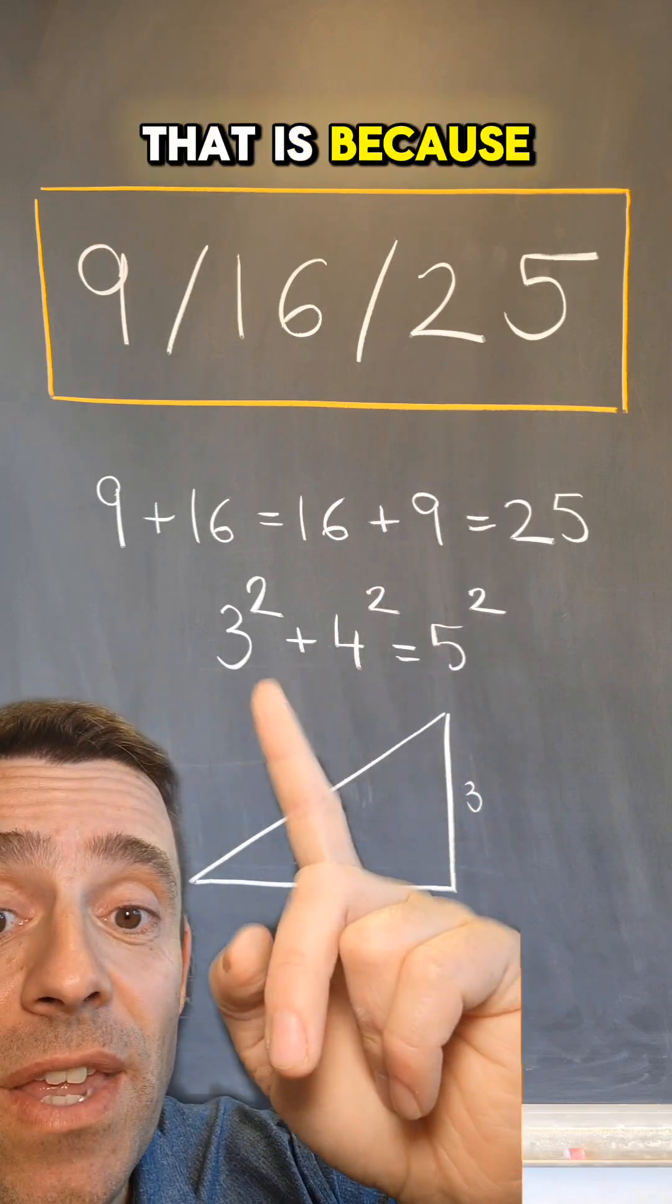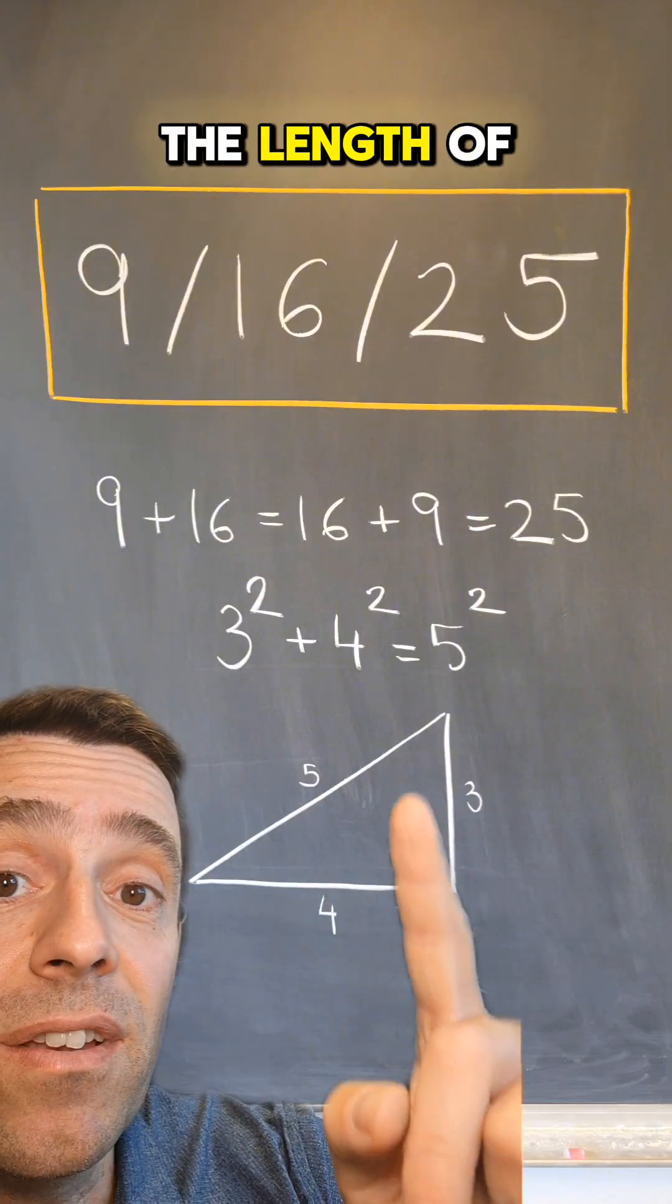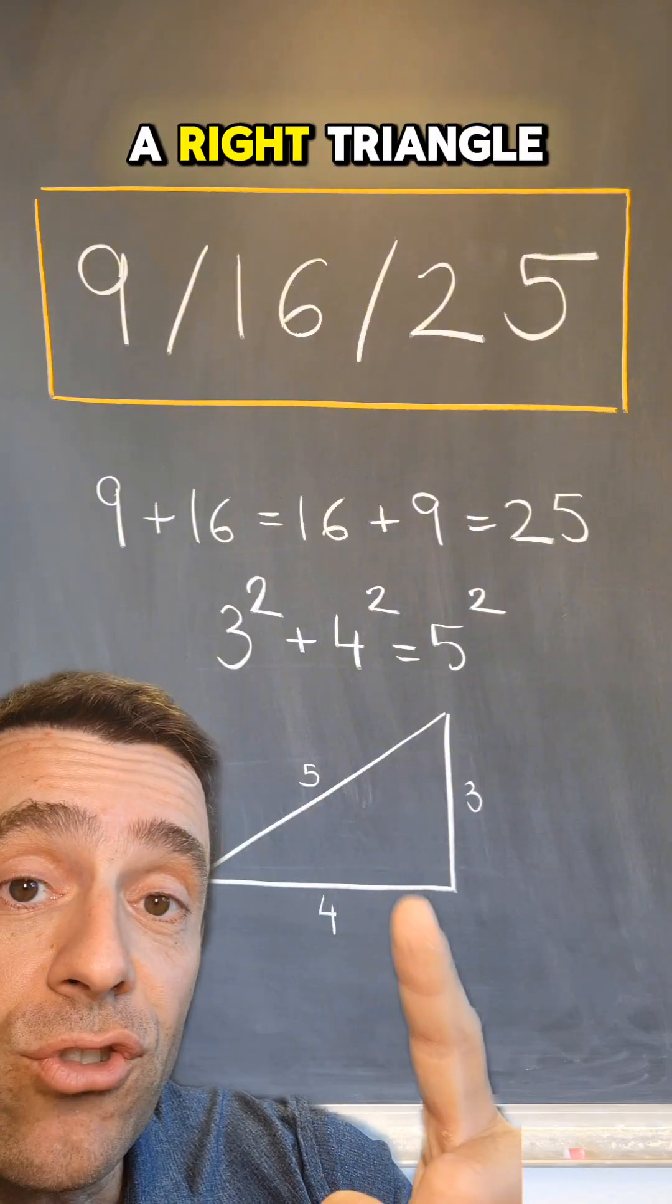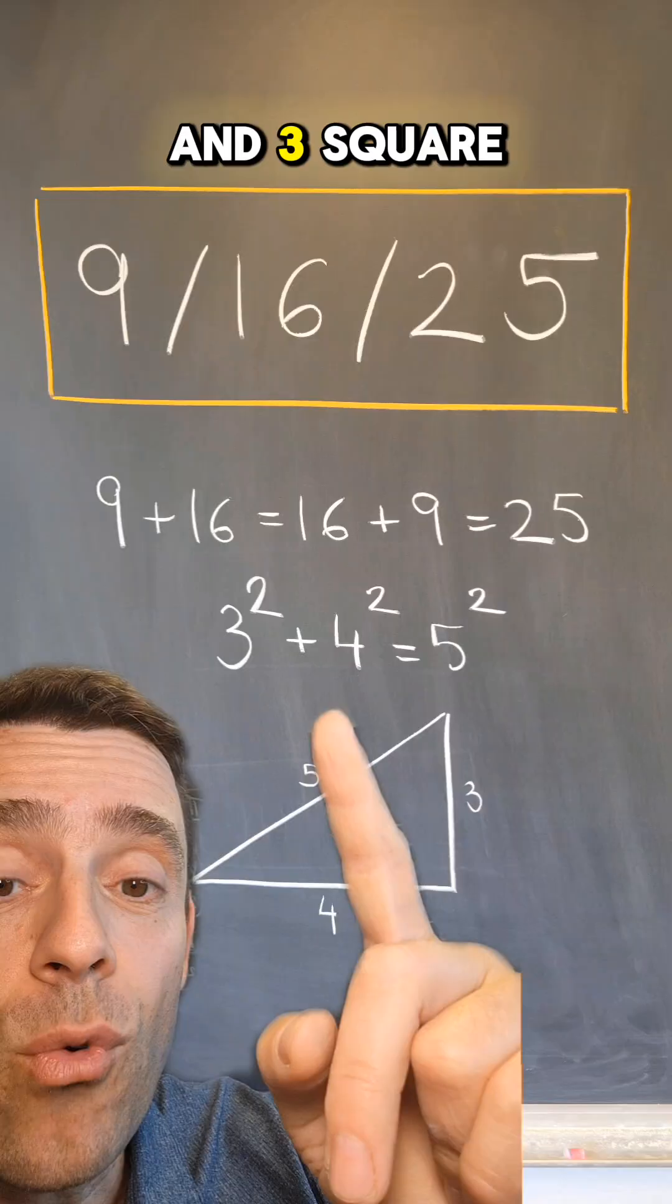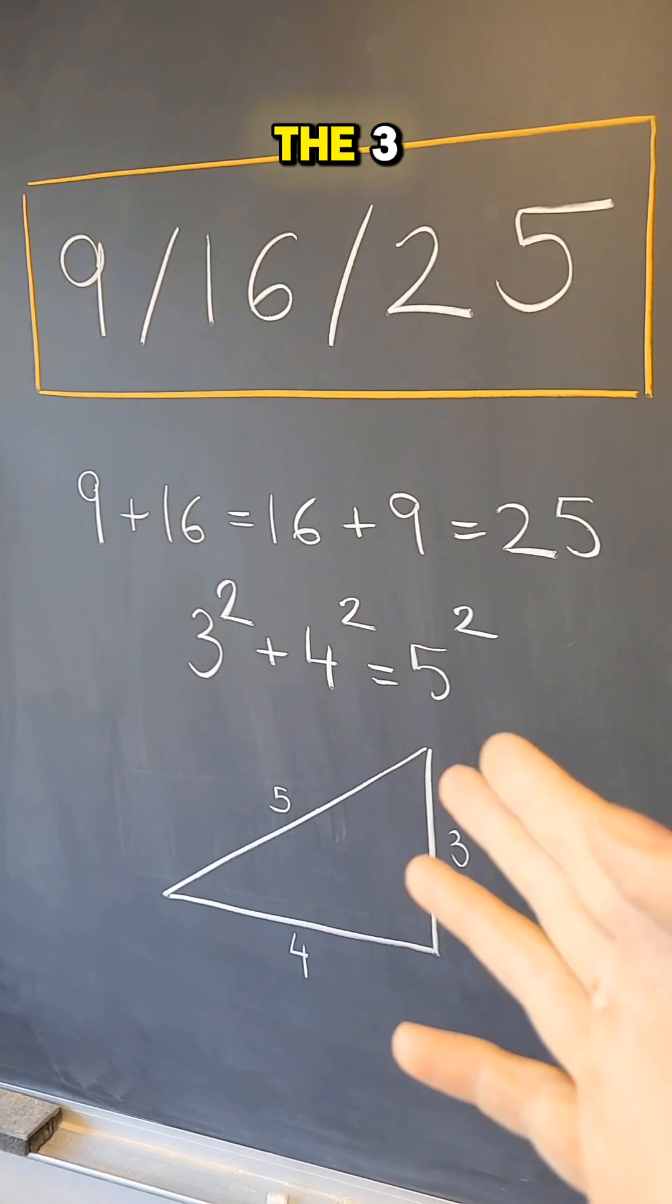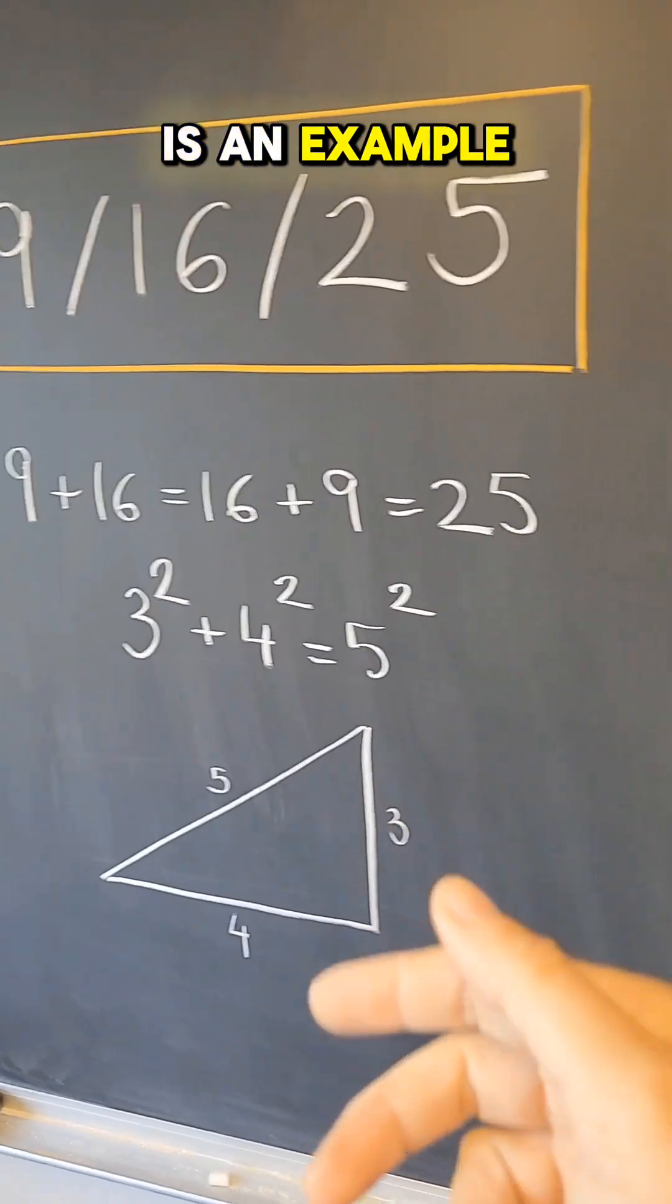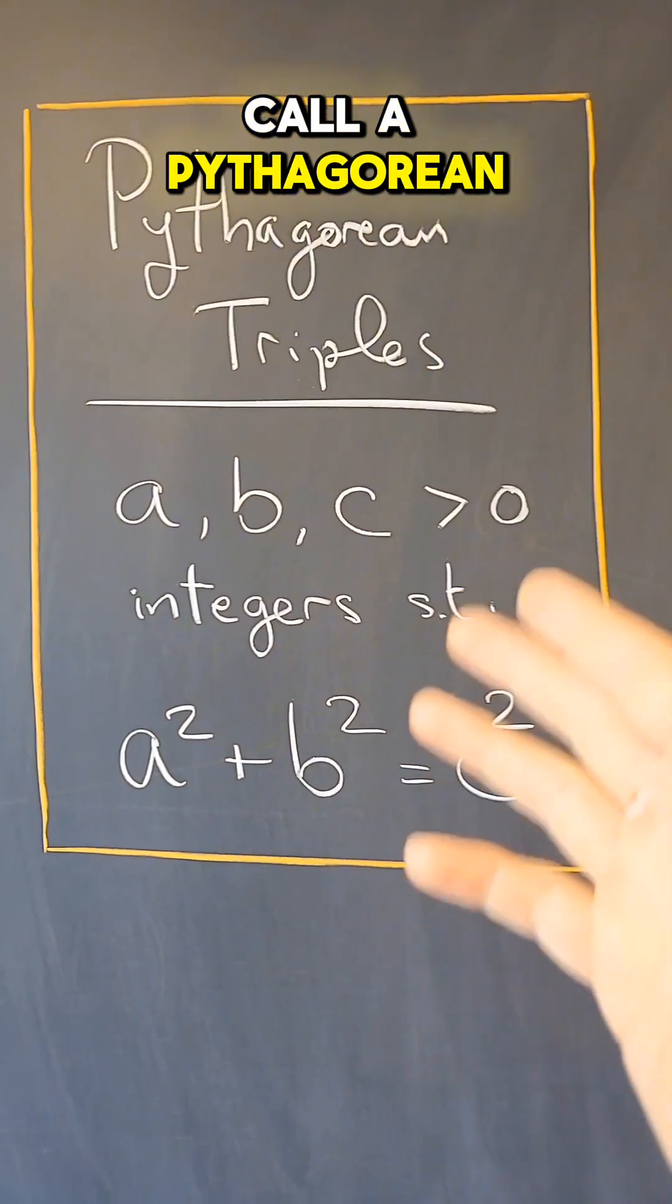That is because the numbers 3, 4, 5 are the length of the sides of a right triangle, and 3 squared plus 4 squared equals 5 squared by Pythagoras theorem. The 3, 4, 5, or 3 squared plus 4 squared equals 5 squared, is an example of what we call a Pythagorean triple.